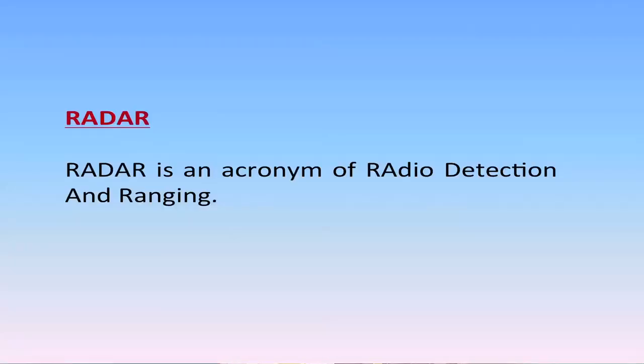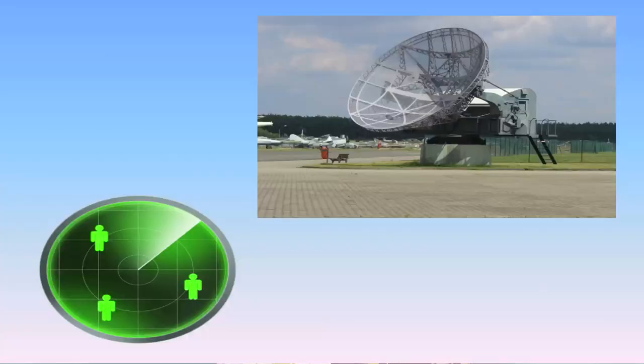Radar is an acronym for Radio Detection And Ranging. Radar is the radio wave equivalent of sonar — in radar, a radio wave does the same job as sound waves in sonar. Radar is useful in many ways: observation of atmospheric objects and phenomena like clouds, cyclones, and raindrops; prediction of weather; air traffic control; ship navigation; and military uses for early warnings.